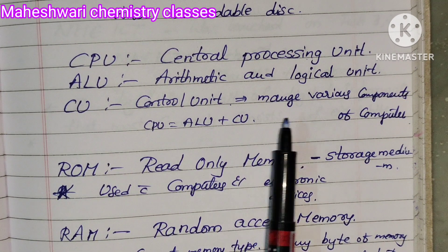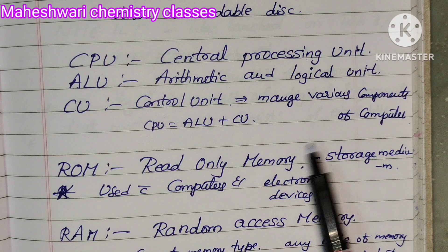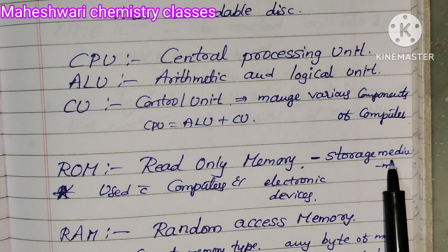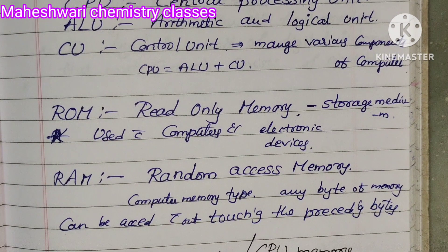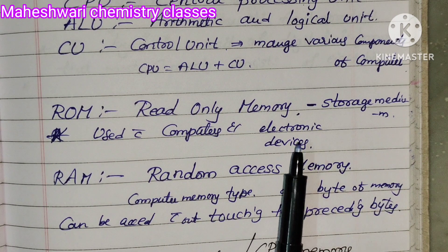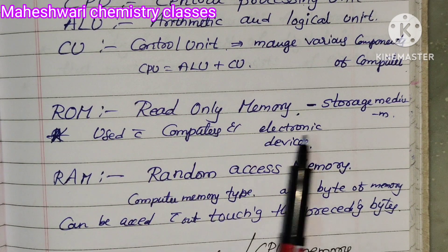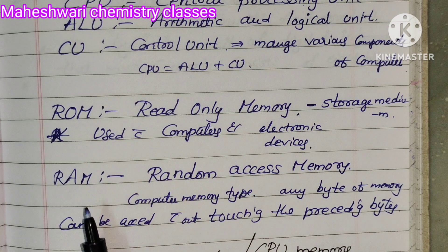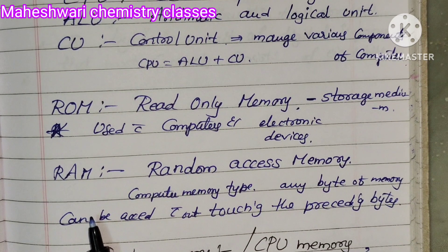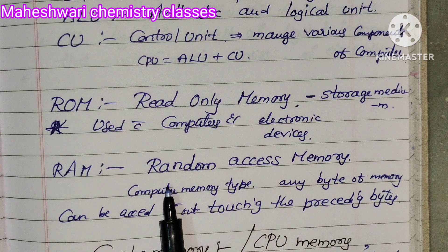Components of computer: ROM — Read Only Memory — is a storage medium used with computers and electronic devices. RAM — Random Access Memory — is a computer memory type.